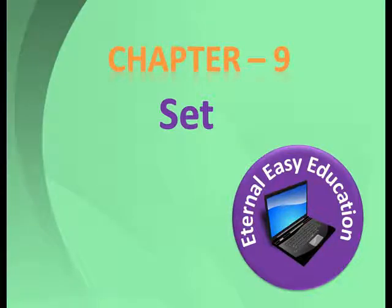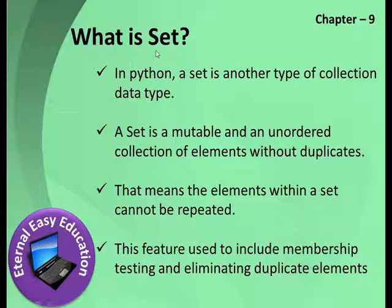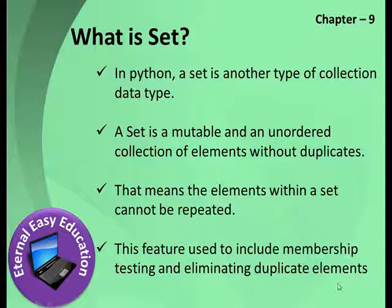Welcome to Eternal Easy Education. In this session we are going to learn Chapter 9 — the concept of Set. Here you are going to learn how to create a set and what set operations are available. A set in Python is another type of collection data type. A set is mutable and an unordered collection of elements without duplicates. The elements within a set cannot be repeated. This feature is used for membership testing and eliminating duplicate elements.